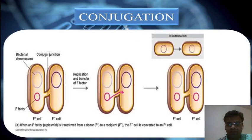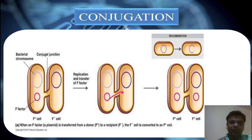The first method of DNA transfer naturally is conjugation. In this method, DNA from one bacterium is transferred to another via a conjugation bridge. As you can see in this picture, a bacterium which has an F-plasmid, also called a fertility factor, forms a conjugation bridge with a bacterium which lacks the F-plasmid, and DNA can be transferred into it.